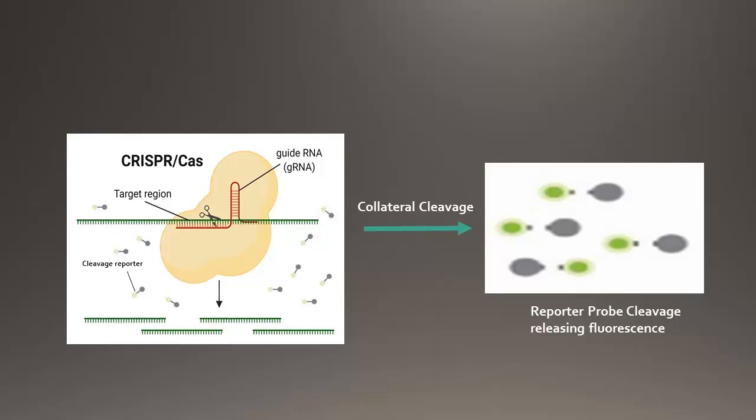Once the Cas gets activated, it starts to cleave the matched sequence, but it also cleaves the neighboring sequences non-specifically. This property of Cas is called collateral cleavage or trans cleavage.